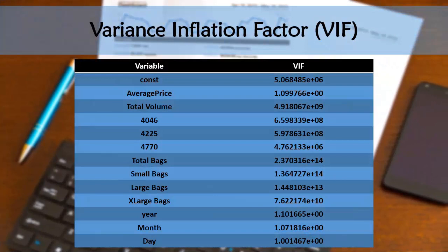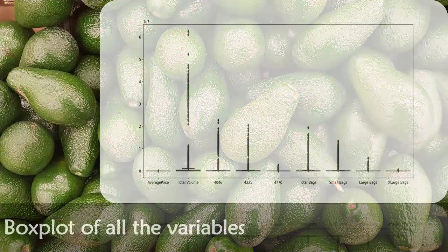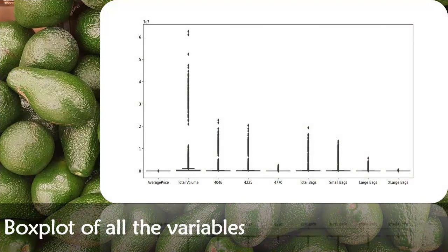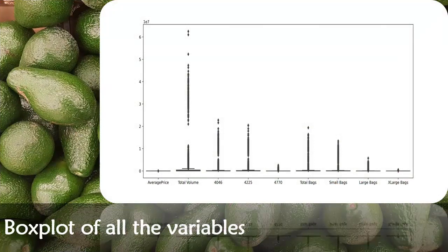The table here shows the variance inflation factor for each variable in our data. The plot here shows the box plot of all the variables in our data. Clearly the box plot indicates that all the variables in our data contains outliers. So before we go on to model fitting, we need to take care of these outliers.